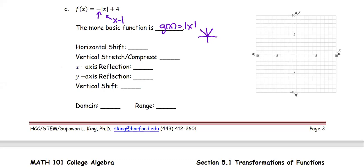If you see x minus h where h is a non-zero number, the horizontal shift will occur. In this case h is 0. Therefore, no horizontal shift.